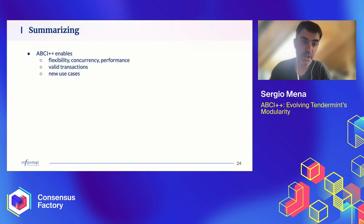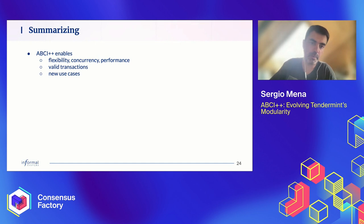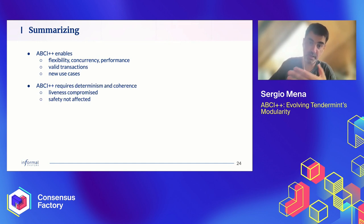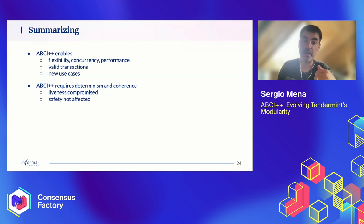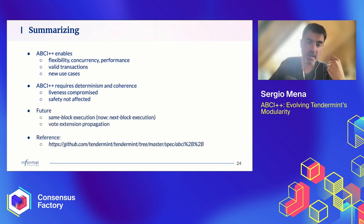Let me conclude. ABCI++ enables further flexibility, concurrency, and performance — allowing us to filter invalid transactions and focus on valid ones — and enables new use cases that were either cumbersome, suboptimal, or impossible before. It comes at a cost: ABCI++ requires determinism, coherence, and other properties. If the application doesn't respect those requirements, the liveness of consensus is compromised. Worth noting: safety is not affected, but liveness is important enough to take seriously. As future work: same-block execution is specified but not yet implemented — this is immediate execution taken to the extreme, where fields that currently refer to the previous block now refer to the same block being proposed.